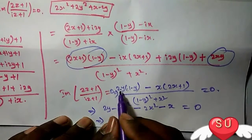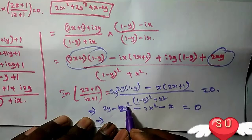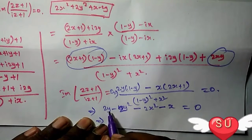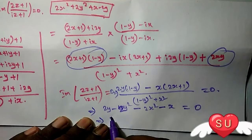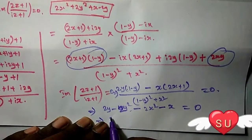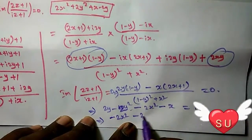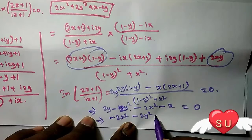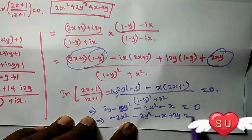Rearranging the terms: -2x² - 2y² - x + 2y = 0.